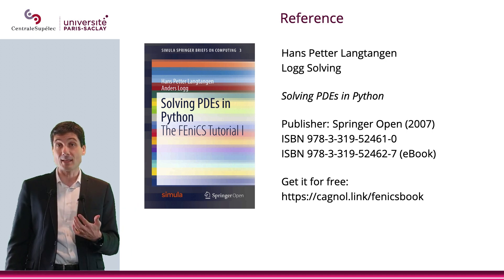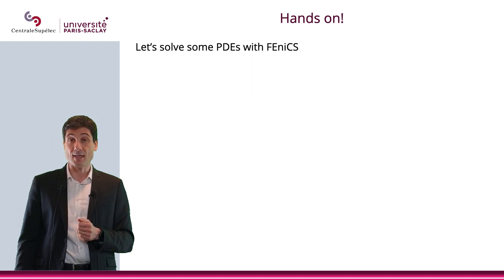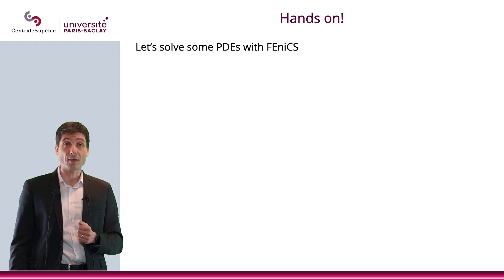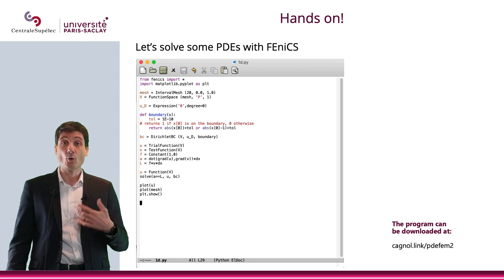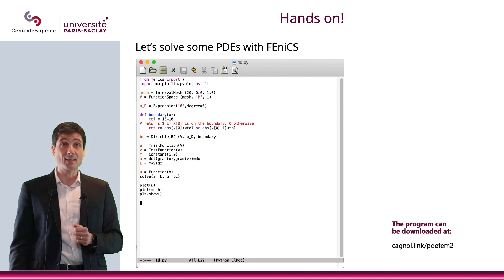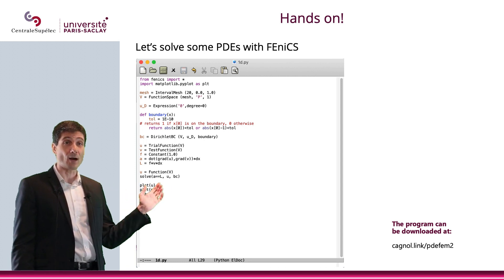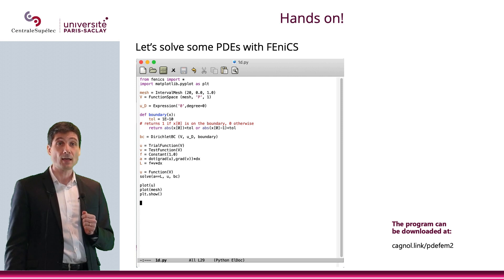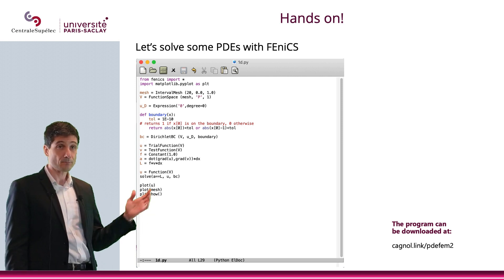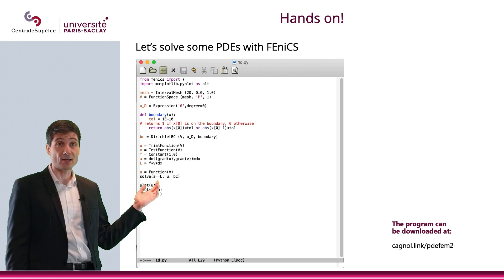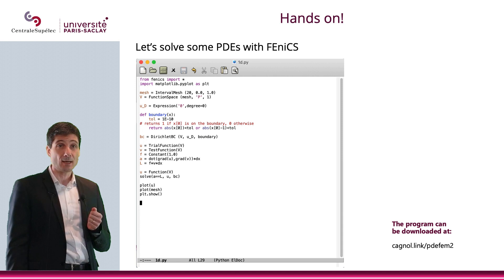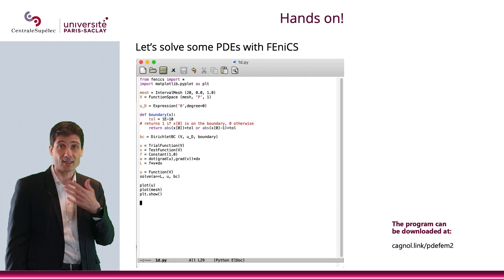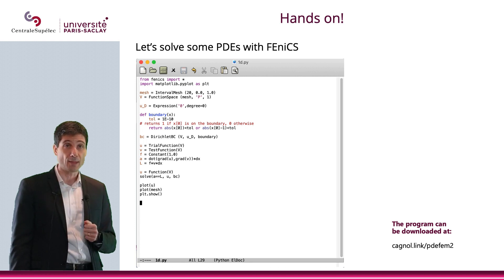So let's get started and actually solve a PDE using FEniCS. We're going to start with a very simple PDE, which is an ODE in dimension 1, which we actually solved by hand earlier together. Here is our program — it's actually pretty short. You start with from fenics import * because you want to use FEniCS. And also, we're going to want to plot some of the functions, so we import matplotlib as plt, which is a very standard Python import.